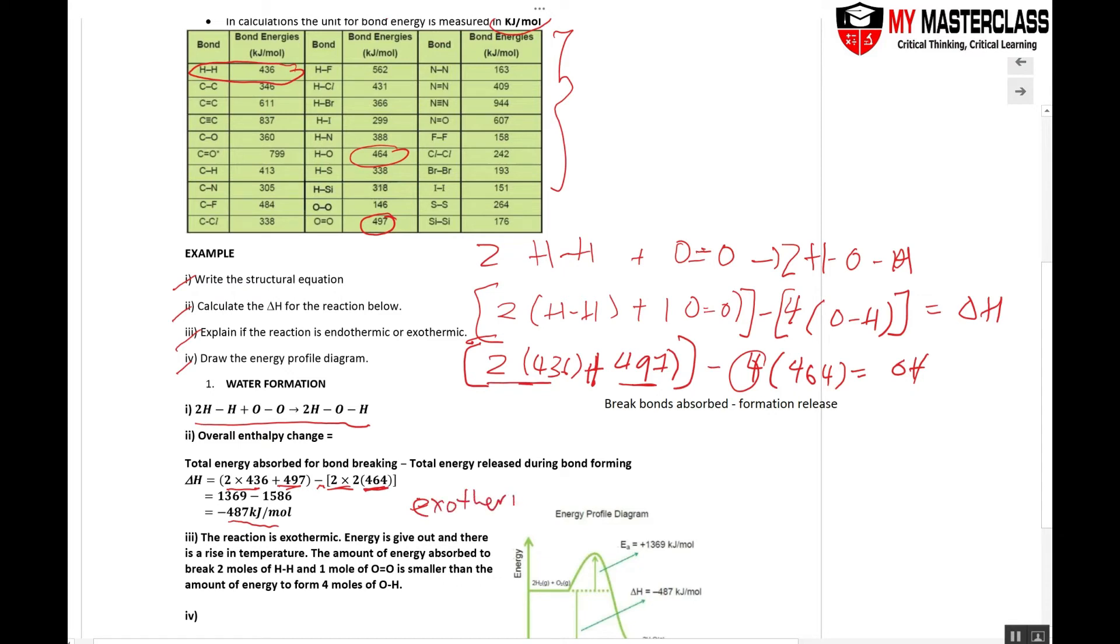Your overall value will be minus 487 exothermic. Exothermic. This is released. How do I know it's released? Look at the values. It must be a small number or minus a big number.